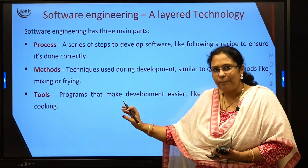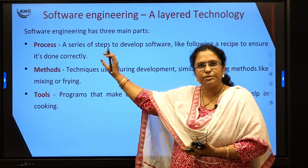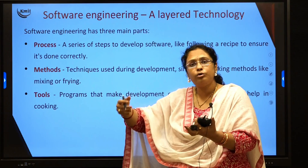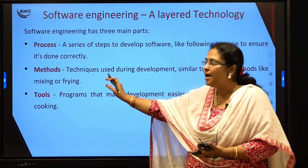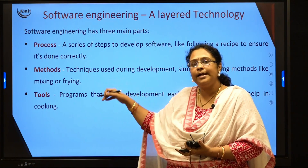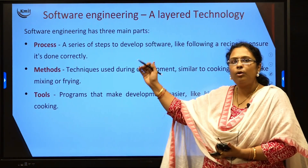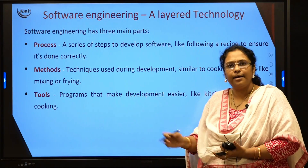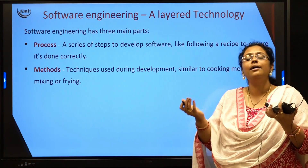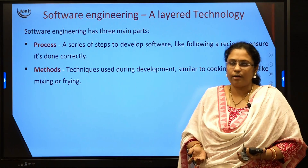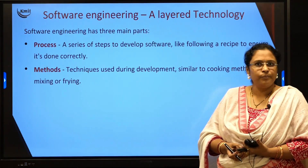In software development you follow certain steps called processes. To follow those steps you take help of certain methods, and these methods internally use tools to make your task easier. By following these three layers you will be able to develop a quality product for your end user. This is called the layer technology of software engineering.